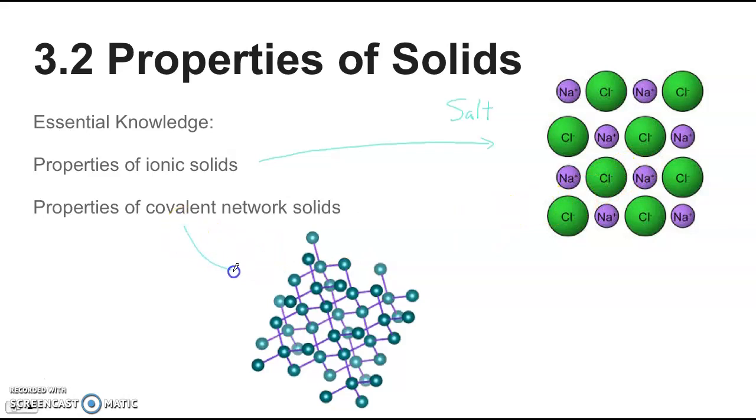The next one is a covalent network solid. An example would be diamond. The lattice points here tend to be atoms, and the bond that holds them together is a covalent bond, which tends to be strong, just like the ionic bond. These tend to be very hard, very brittle, and don't conduct electricity because of these strong bonds and the electrons are localized, so they're not free to move around.